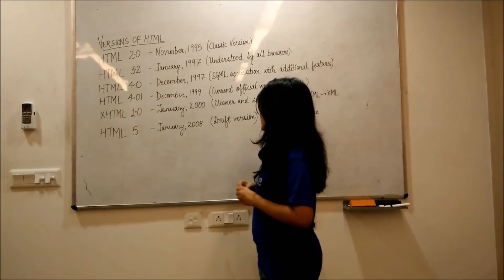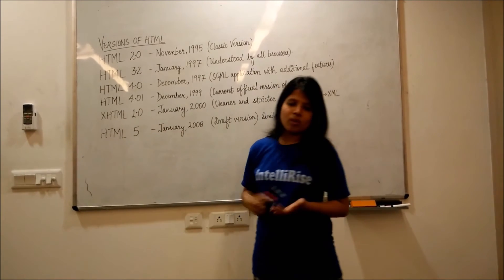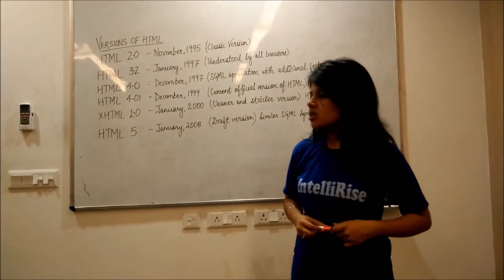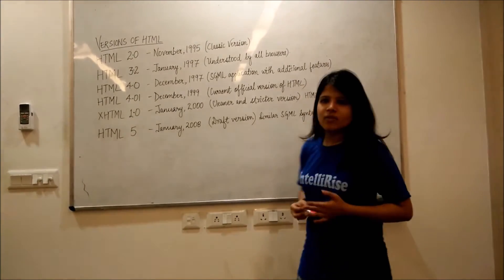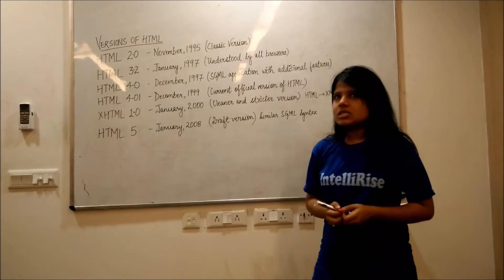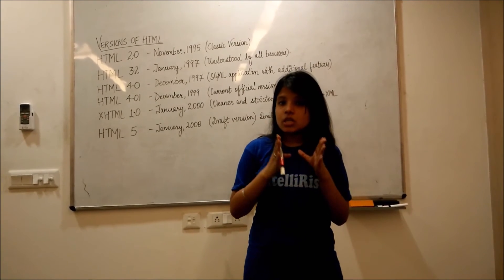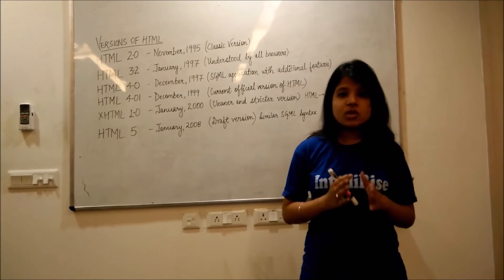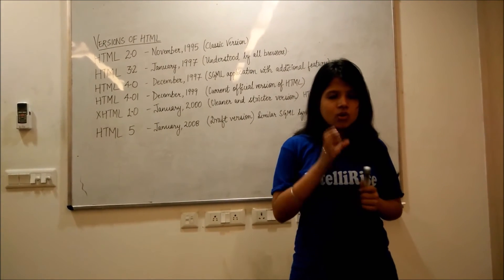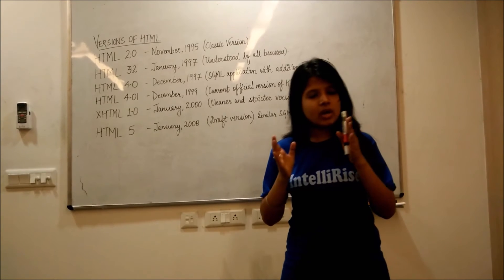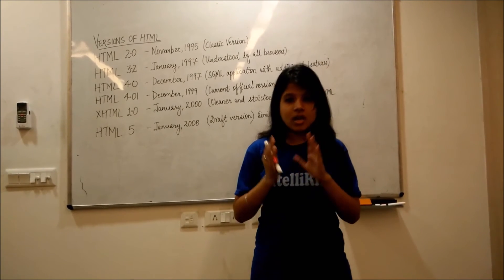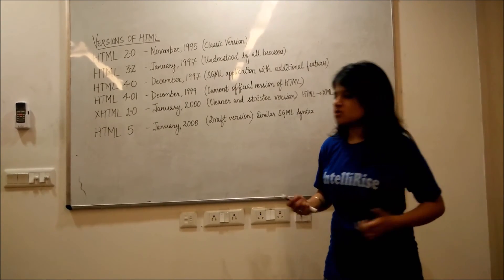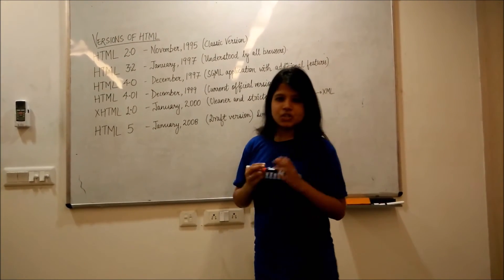Then we had XHTML 1.0 — XHTML, which is Extensible HTML. It was released in January 2000, and it is a more stricter version of HTML. The key point was that we were able to make a transition from HTML to XHTML, that is Extensible Markup Language, and it has its own applications.